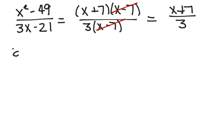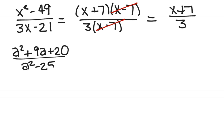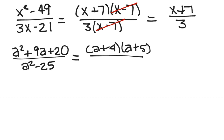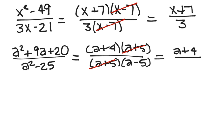Similar example: a squared plus 9a plus 20 divided by a squared minus 25. Once again, factor. The numerator factors into a plus 4 times a plus 5. The denominator factors into a plus 5 times a minus 5. Again, looking for a common factor — this time that would be a plus 5. And remaining, we have a plus 4 over a minus 5.